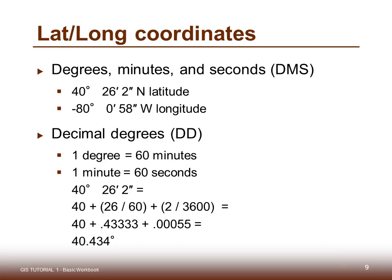Here's how latitude and longitude coordinates are written. They're measured in degrees, minutes, and seconds. So a location of 40 degrees, 26 minutes, and 2 seconds north latitude, and 80 degrees, 0 minutes and 58 seconds west longitude is what was shown on the map. Another way to write that same location is by using decimal degrees. One degree equals 60 minutes, and one minute equals 60 seconds. So 40 degrees, 26 minutes, and 2 seconds is equivalent to 40.434 degrees.